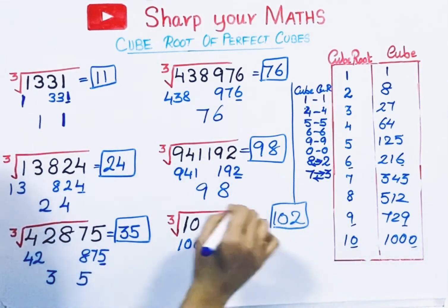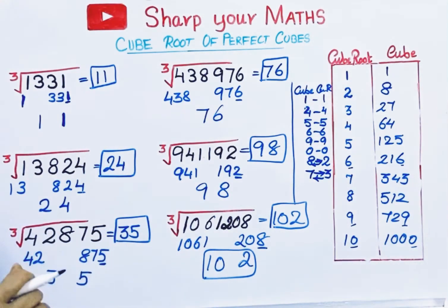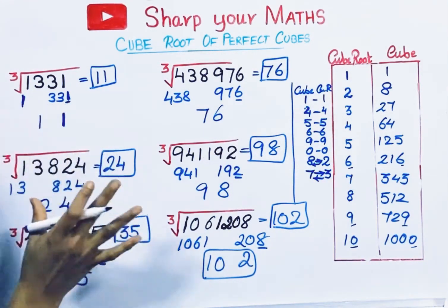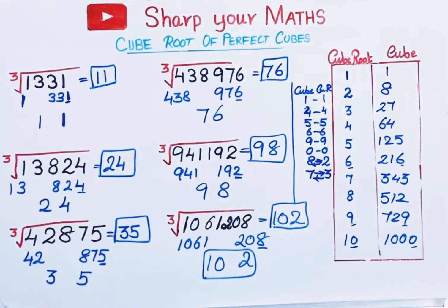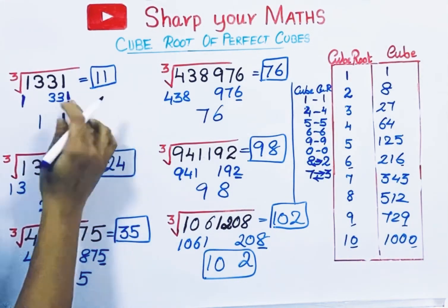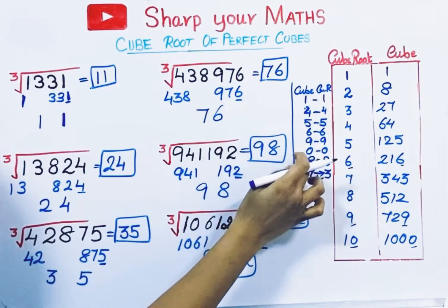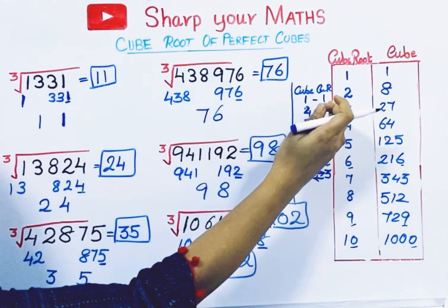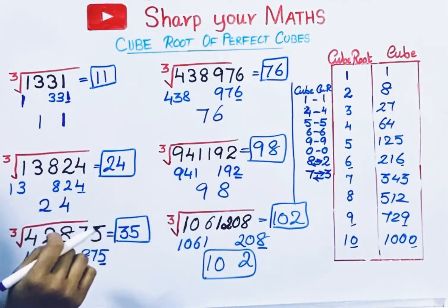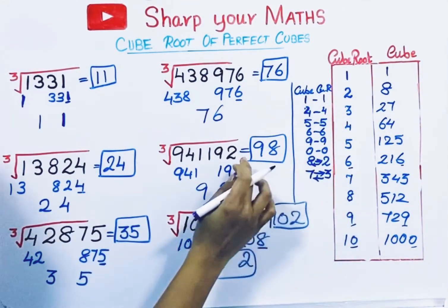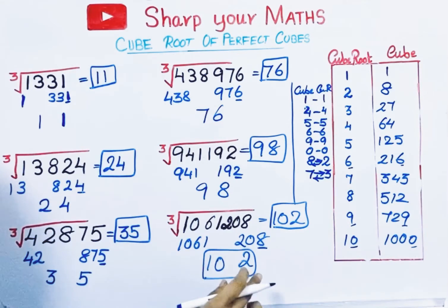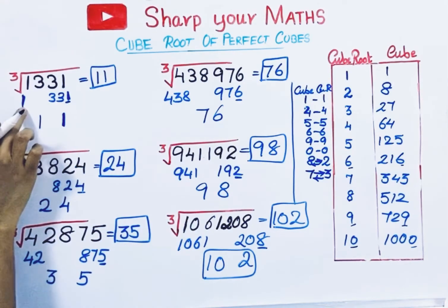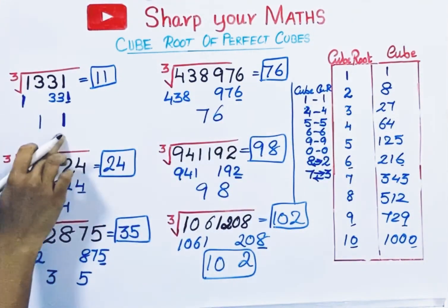To summarize how to find the cube root of perfect cubes: divide the number into groups — the rightmost group should have 3 digits, remaining digits in the leftmost group. Check the unit digit of the rightmost group. If it ends with 1, 4, 5, 6, 9, or 0, the cube root ends with the same digit. If the cube ends with 2, cube root ends with 8. If the cube ends with 8, cube root ends with 2. Similarly, 7 and 3 are opposites. Then take the leftmost group, find the closest cube less than or equal to it, and take its cube root.